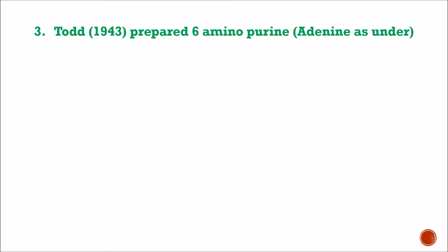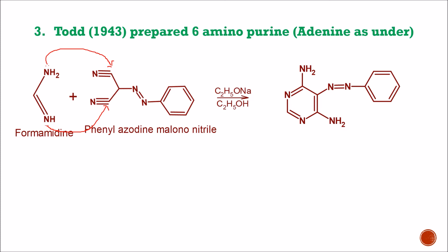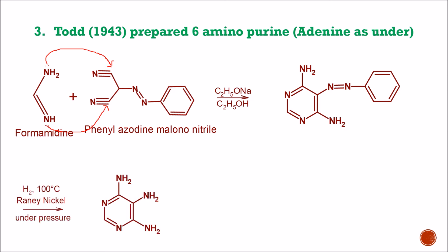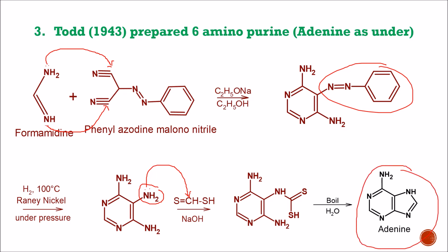Todd in 1943 prepared 6-aminopurine using formamide and phenylazodicyanomethane. The lone pairs of electrons of nitrogen attack the nitrile carbon. Then, from this nitrile, in the presence of C2H5ONa and C2H5OH, the whole ring structures are attached to the nitrogens. Further reduction in the presence of Raney nickel at 100°C under pressure replaces the azo groups with NH2 groups. After this, the nitrogen further reacts with this compound, with the carbon attached to the lone pair of nitrogen in the presence of NaOH. The whole structure attaches to the nitrogen, and after boiling in the presence of water, ring closure takes place and the final structure of adenine is formed.